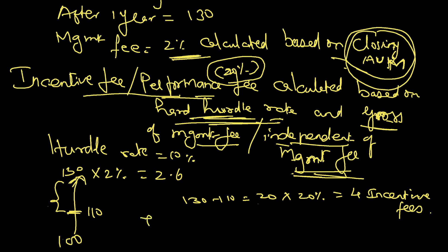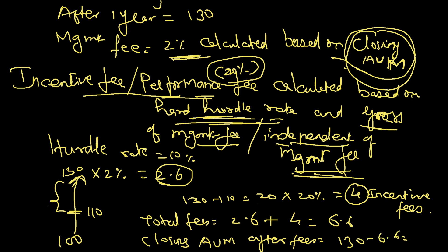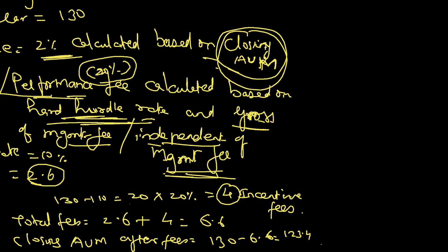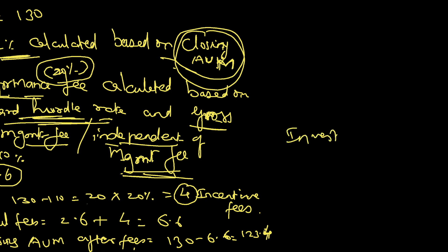Total fees paid: 2.6 as management fee plus 4 as incentive fee equals 6.6. So closing assets under management after fees: 130 minus 6.6 equals 123.4.